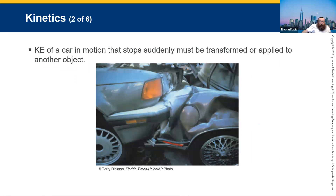When an object in motion hits something else, it has to stop and the energy has to be transferred to something else. This picture is trying to show you something called crumple zones — the idea is that the front of the car will take the energy and transfer it from kinetic energy into potential energy, so the energy gets absorbed by the hood before it reaches the patient inside.